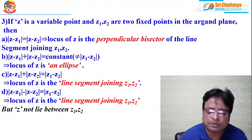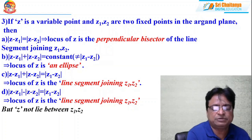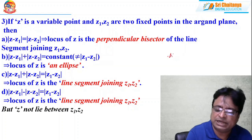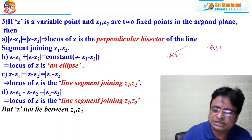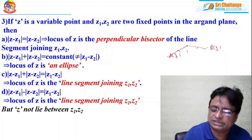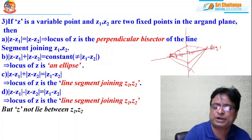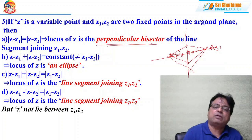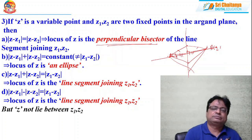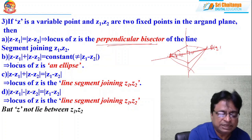Number three: if z is a variable point and z1, z2 are two fixed points in the argand plane, and the distance from z to z1 equals the distance from z to z2 — that is, |z − z1| = |z − z2| — then the locus of z is the perpendicular bisector of the segment joining z1 and z2. This is the same result we derived in coordinate geometry, now represented in complex numbers.